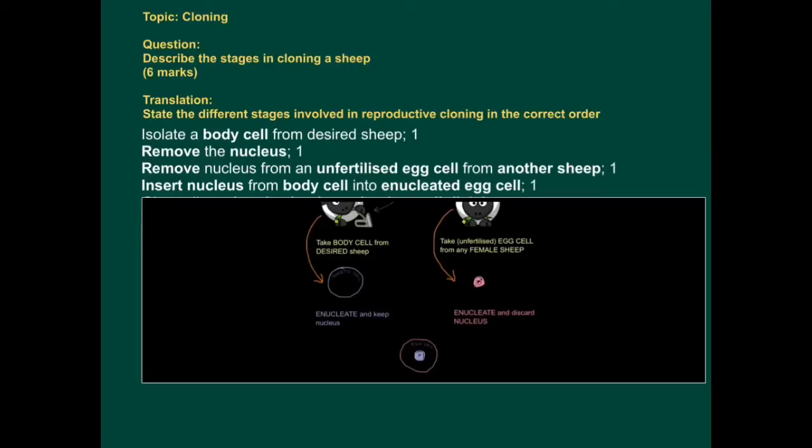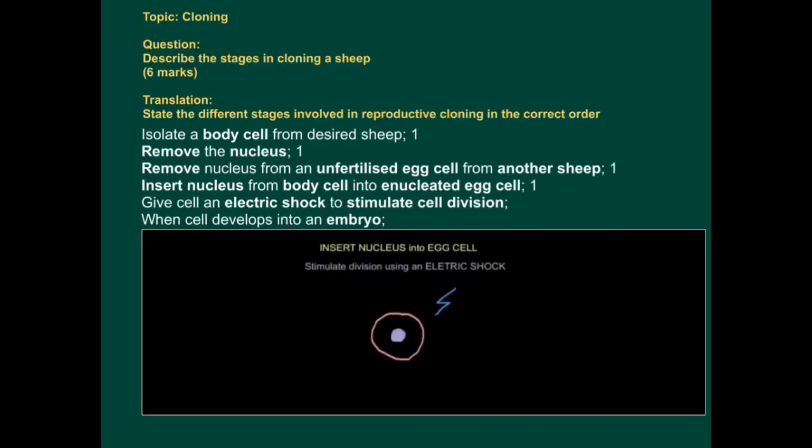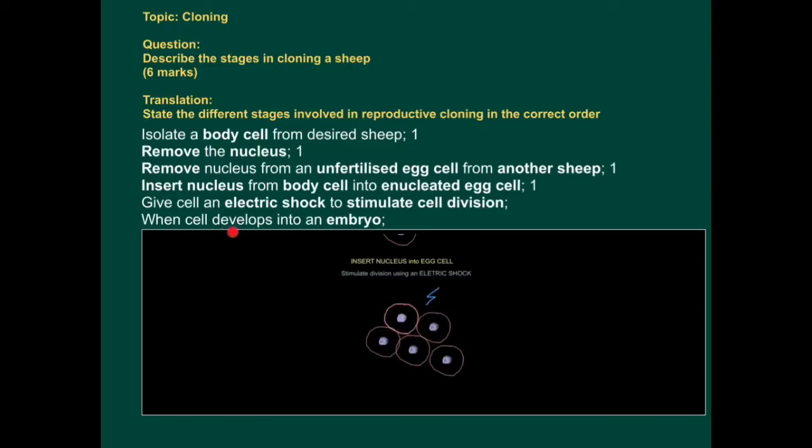So now our egg cell needs a little bit of a kickstart to get it dividing. This comes in the form of an electric shock, a small electric shock. So give an electric shock to stimulate cell division. You can see the cell starts to divide to form an embryo. So you have to wait until the cell develops into an embryo.